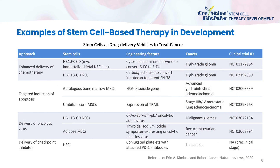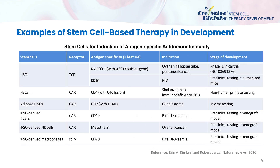As an example of stem cells as drug delivery vehicles to treat cancer, approaches include enhanced delivery of chemotherapy, targeted induction of apoptosis, delivery of oncolytic virus, and delivery of immune checkpoint inhibitor, with six cases in clinical trials. There are also examples of stem cells for induction of antigen-specific antitumor immunity, involving the application of TCR and CAR technologies in hematopoietic stem cells, adipose MSCs, and iPSCs, with most of these cases in preclinical development.